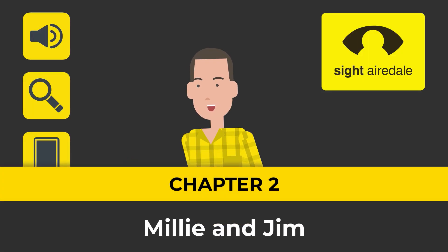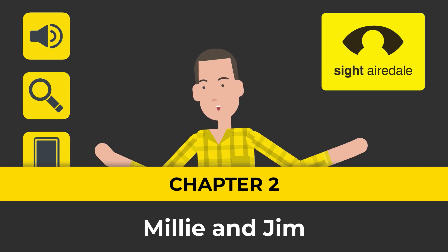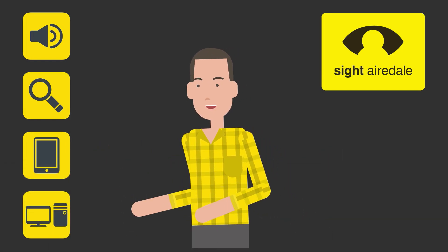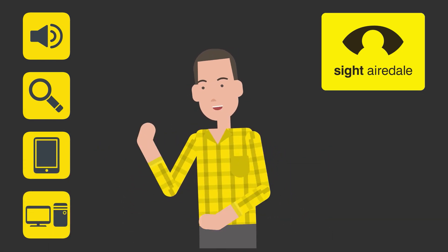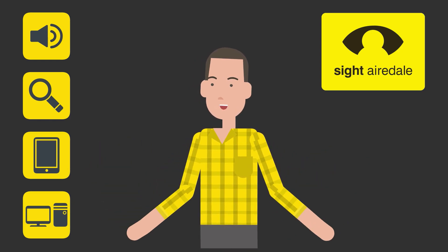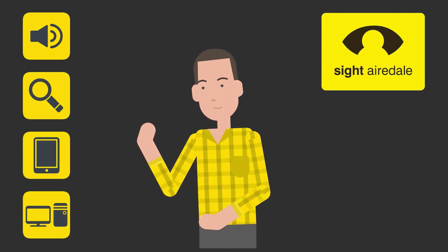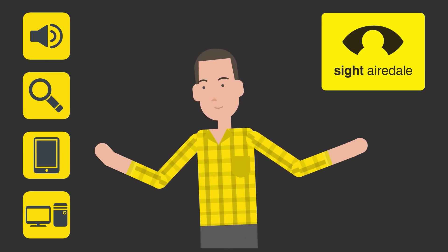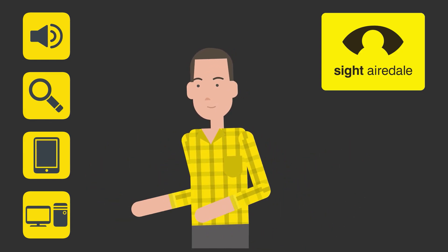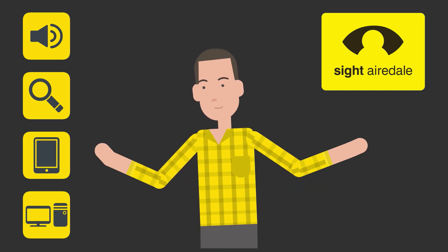So now let's meet Millie and Jim. Jim has just got a new Mac and he's having trouble seeing the screen. Both Millie and Jim are fictional characters. However, the problems that Jim has are the types of problems that people have come to us with.